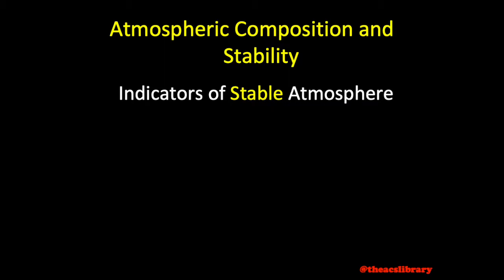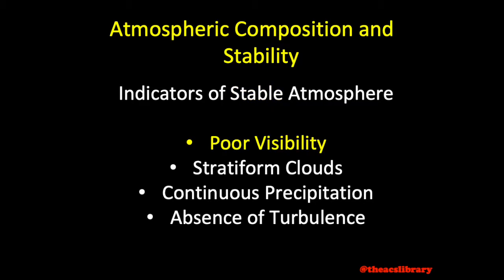Lastly, we will cover the indicators of stable and unstable air, beginning with stable air. Poor visibility may be an indicator of stable air, as nothing is clearing the obstructing phenomena from the area. Other indicators may be stratiform clouds, continuous precipitation, and smooth air.